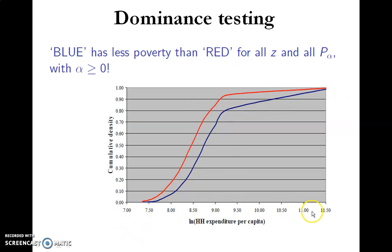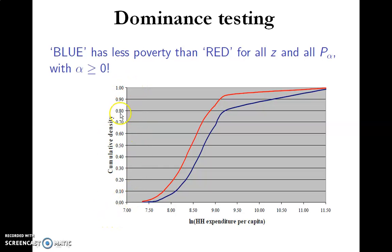On the x-axis, we have some proxy for income — here it's the log of household expenditure per capita. On the y-axis, we arrange society from poorest to richest, and as you move up it accounts for the proportion of that society that lies below a particular income level.